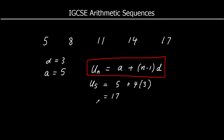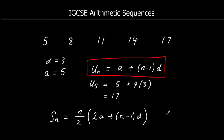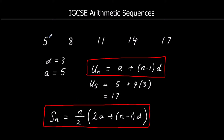The nth term formula is uₙ = a + (n−1)d. The other formula, which is given to you in the IGCSE exam, says Sₙ, the sum of n terms, is n/2 × (2a + (n−1)d). We can use this formula to find the sum of some terms in the sequence. For example, for the sum of the first five terms, we substitute n=5, a=5, and d=3 to find what those first five terms add up to.